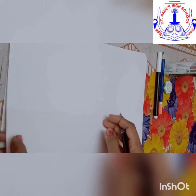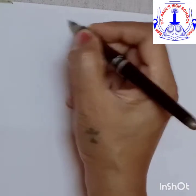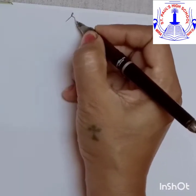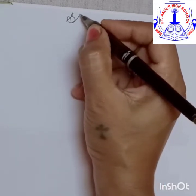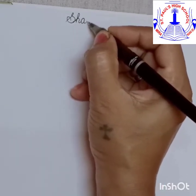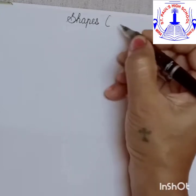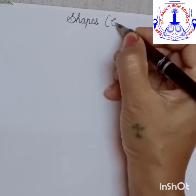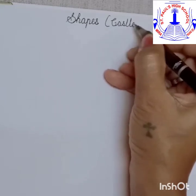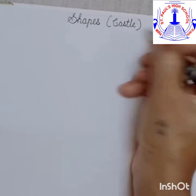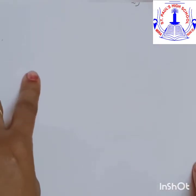Let's take our drawing book. Write the topic: Shapes Castle. We are going to make a castle with the help of shapes. So children, for that you require your pencil, eraser, the black sketch pen and some colours.